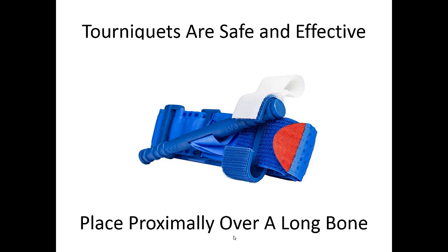Make sure when you place a tourniquet that you're exposing the skin underneath and placing them as close as you can to the core of the body — proximally means close to the core, so either close to the armpit or close to the groin. Make sure you have all the clothing and anatomy out of the way so that you can get a nice tight seal over that long bone and occlude the bleeding that's happening below where the tourniquet is.